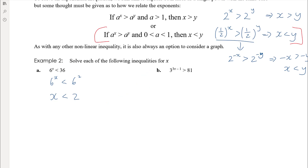You can always think about it graphically, just like we do for quadratic and cubic inequalities — for any non-linear inequality, a graphical solution is really the best one. For a more direct example: 3 to the power of 3x minus 1 is bigger than 81, which is 3 to the power of 4. So 3x minus 1 is bigger than 4. Adding 1 to both sides, 3x is bigger than 5. Dividing by 3, x has to be bigger than 5 thirds.